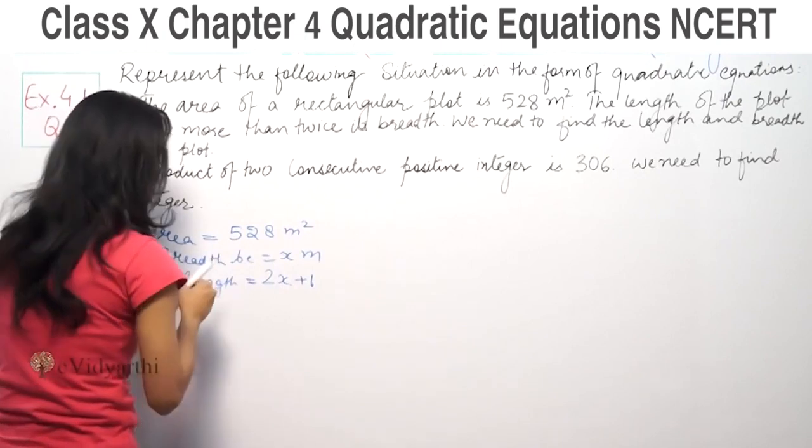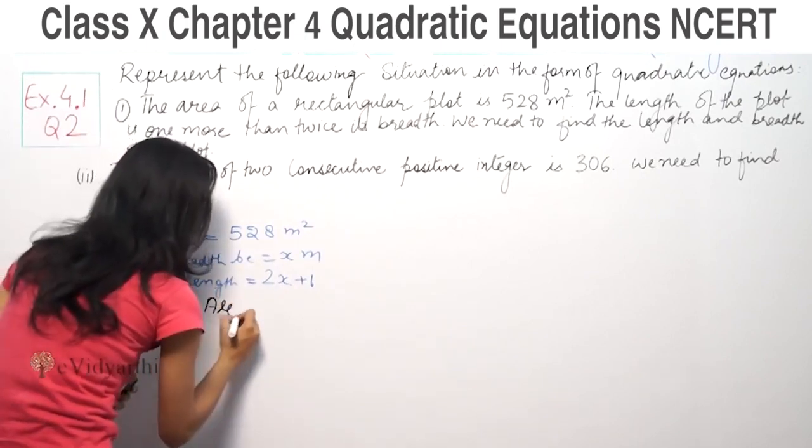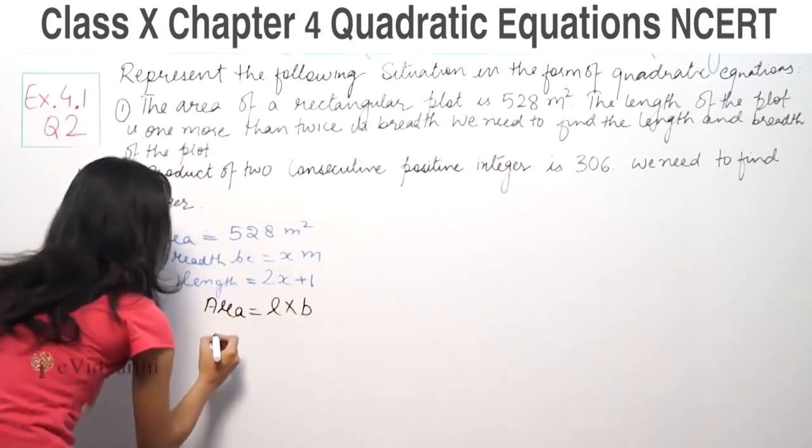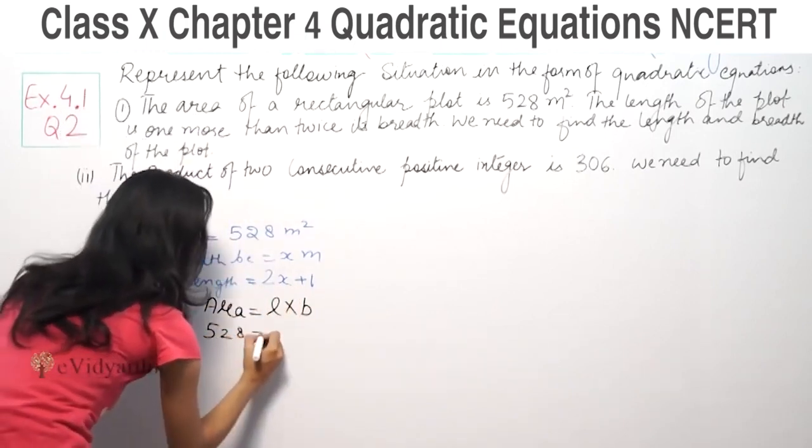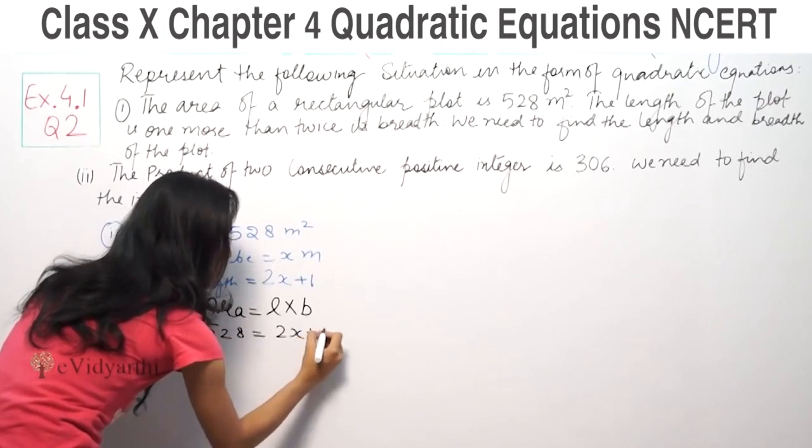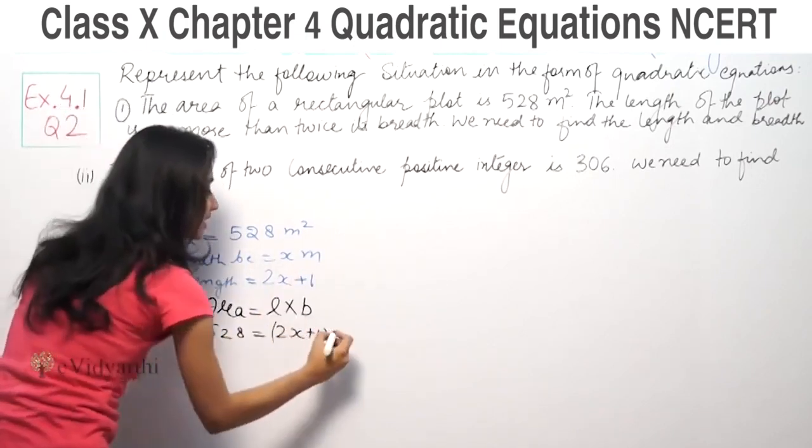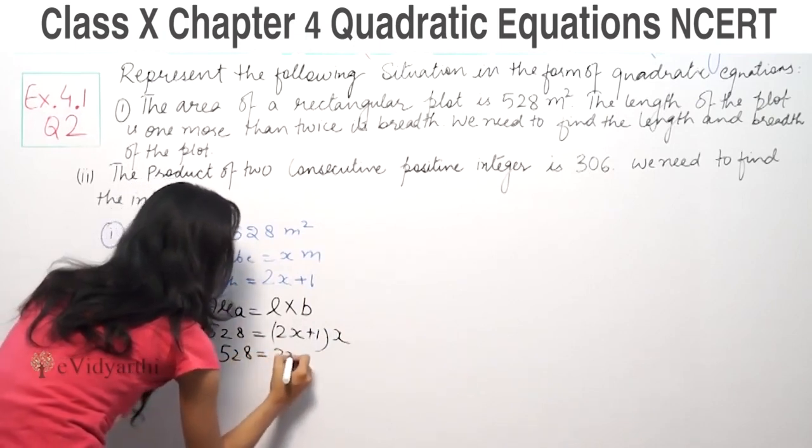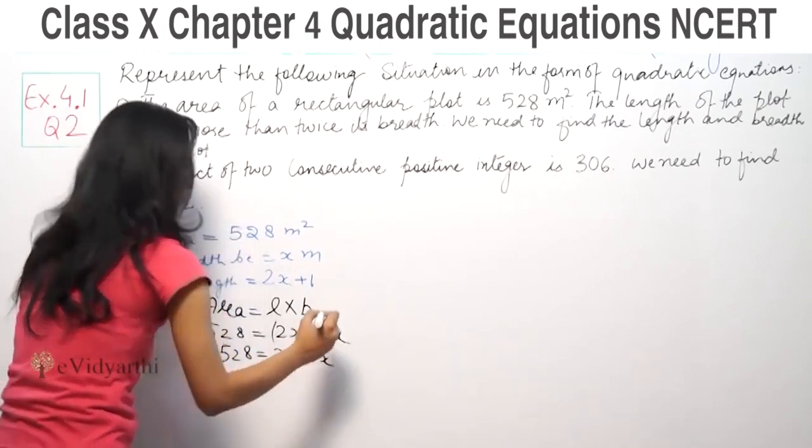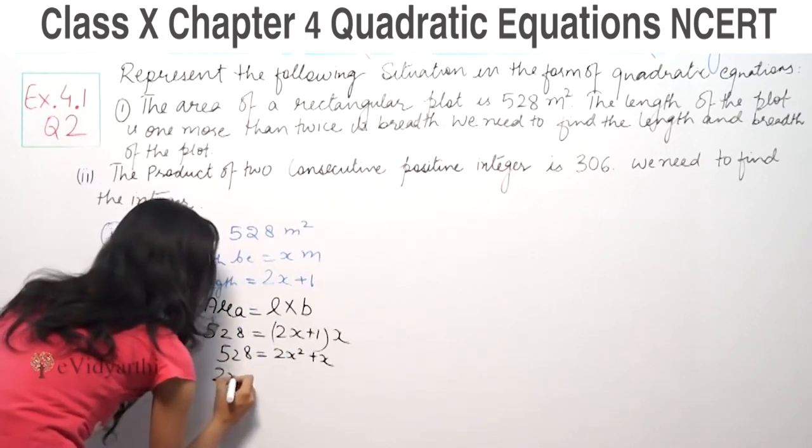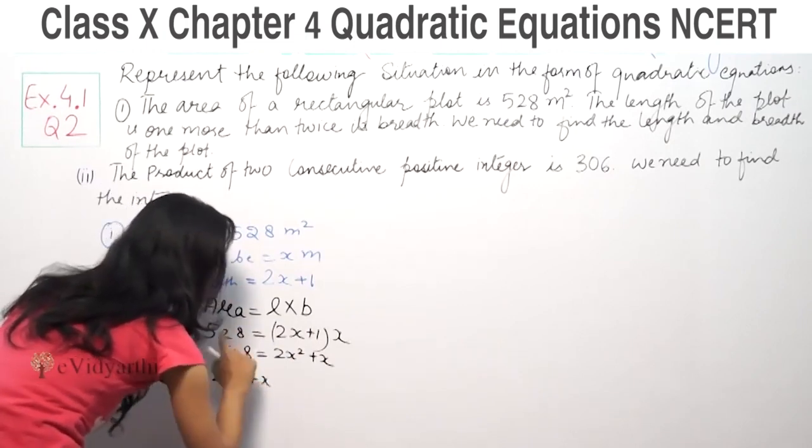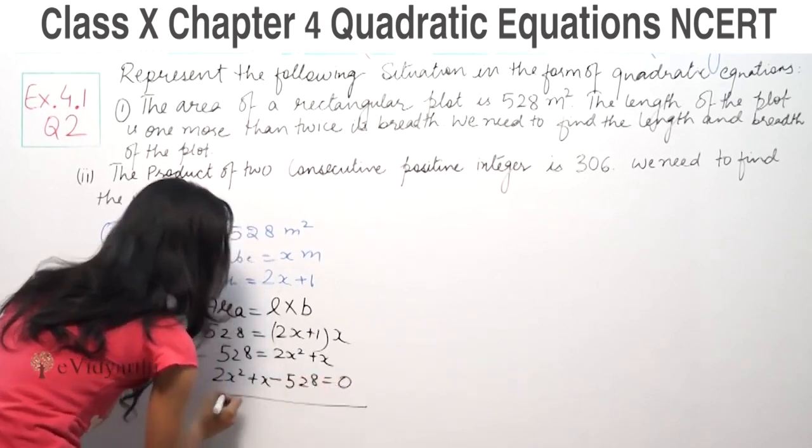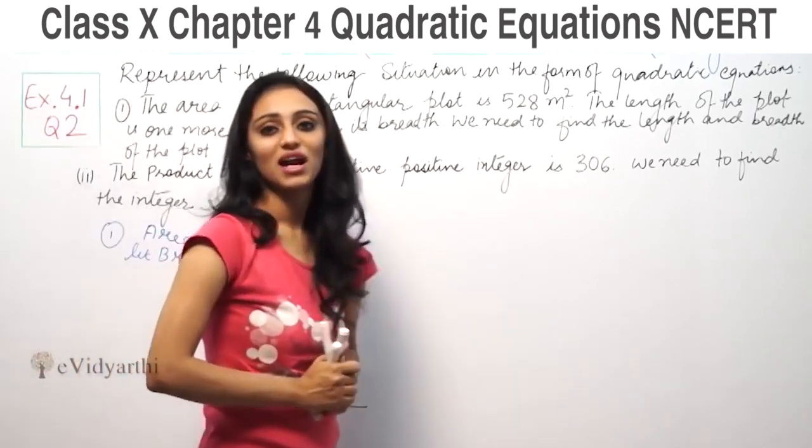The equation for area is length into breadth. Area is 528, length is 2x plus 1 and width is x. When multiplied, 528 equals 2x square plus x. That means 2x square plus x minus 528 equal to 0. This is our quadratic equation.